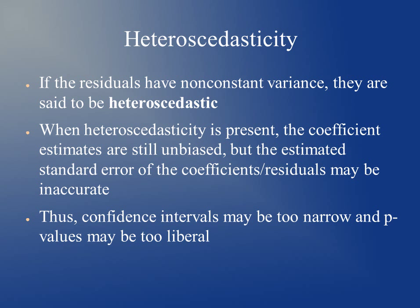Heteroscedasticity means that there is non-constant variance in the errors. For instance, if you have extreme values of y, your errors could be way off and you don't have the normally distributed error with constant variance that we want in our model. When heteroscedasticity is present, the coefficient estimates will still be unbiased, but the standard error of the coefficients and residuals may be inaccurate. This results in our confidence intervals being too narrow and p-values being too liberal.